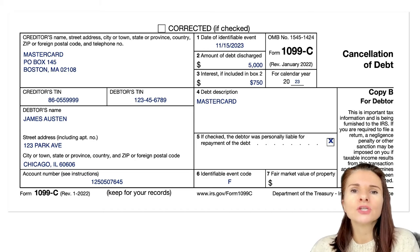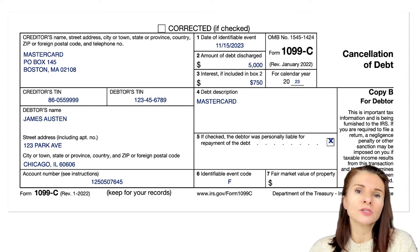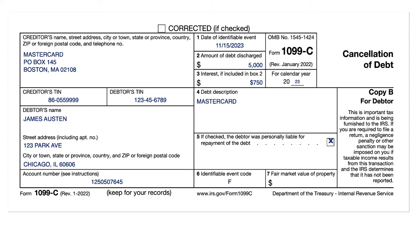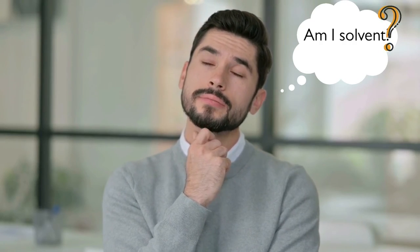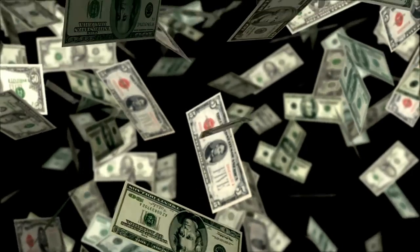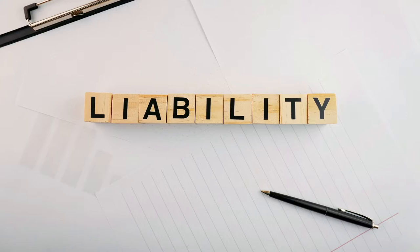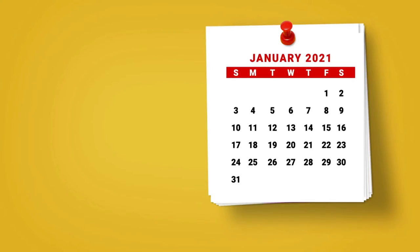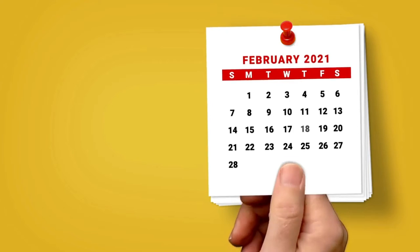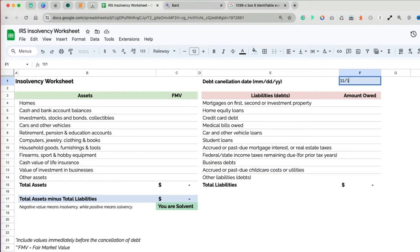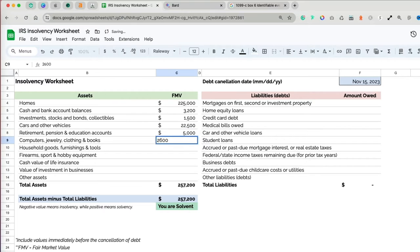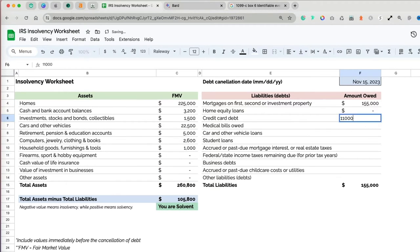Before the cancellation of debt is considered income, James would have to see whether he was solvent immediately before the debt was canceled. He has to check what his assets and liabilities were right before the cancellation. I have a simplified version of the IRS worksheet here — let's put in some numbers for the assets and liabilities.